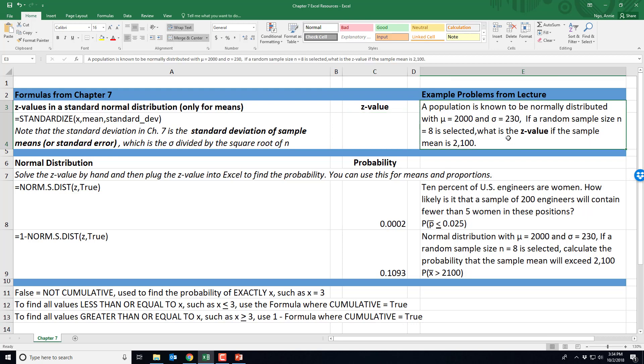Here's our scenario: a population is known to be normally distributed with a mean of 2000 and a standard deviation of 230. If a random sample size of 8 is selected, what is the z value if the sample mean is 2100?